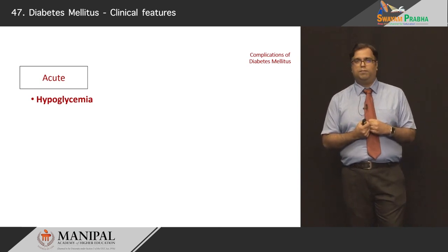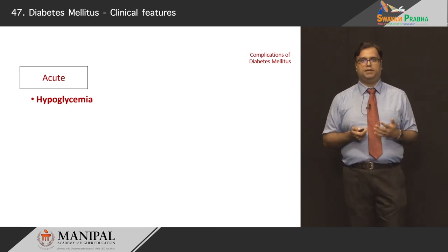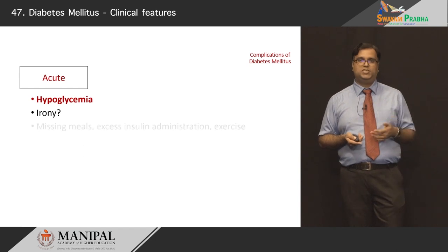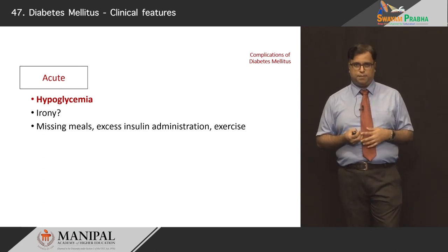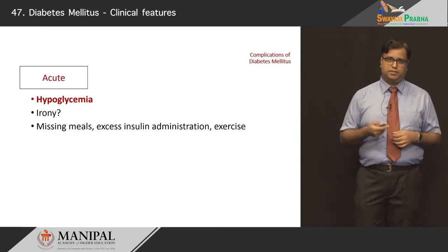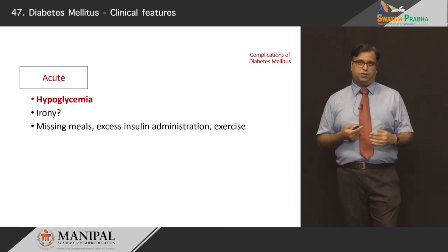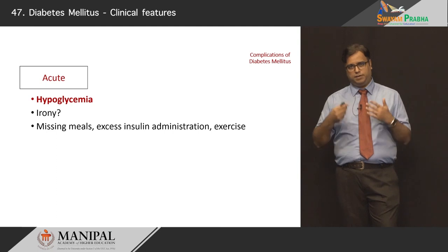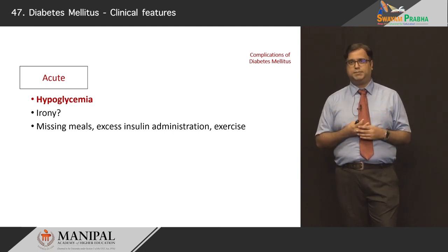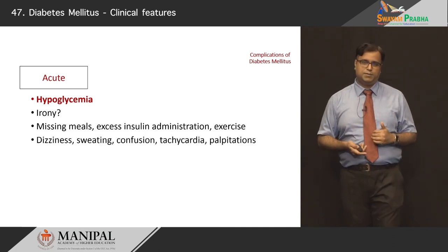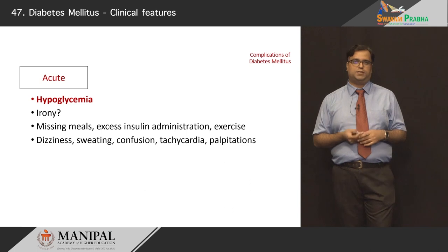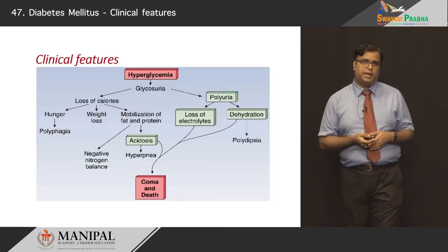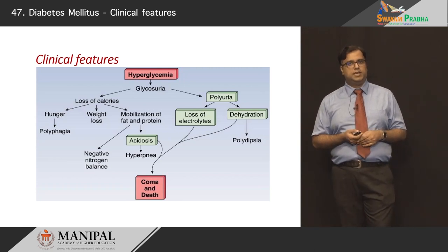Paradoxically, another acute metabolic complication can be hypoglycemia. How does it come about in a situation where glucose should be high? This is a delicious irony of complications in diabetes — usually following the person missing meals, excess insulin administration, taking more dosages of subcutaneous insulin than normal, or a lot of physical exertion or exercise, which drops blood glucose levels very rapidly to a very low point. So they present with sympathetic symptoms like dizziness, sweating, confusion, tachycardia, and palpitations. Your acute complications can be summarized as diabetic ketoacidosis, HHS, and hypoglycemia.